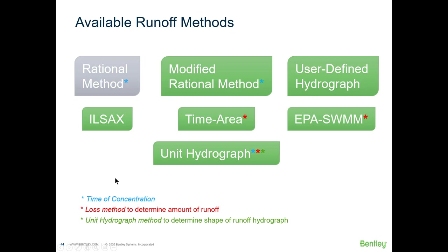These are all the available runoff methods in Civil Storm and Sewer GEMS. The rational method is highlighted in gray because it's a peak flow method — with this method we don't generate a runoff hydrograph, but rather a single peak discharge for a catchment. We covered this in the fundamentals course. All the other methods in green do generate a runoff hydrograph. Some methods share common concepts marked with asterisks: time of concentration, loss methods, and unit hydrograph methods.